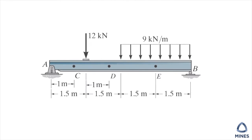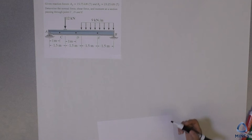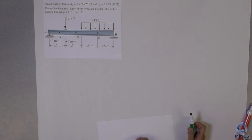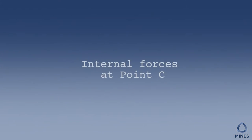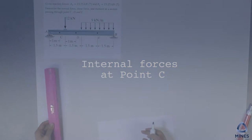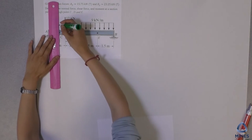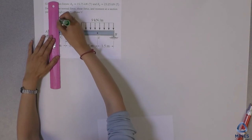For this problem we have to find out what is the internal force at C, D, E, at different points on this simply supported beam. What we are going to do is actually do several cuts. Let's do the internal force at C first, which means we are going to do the cut at C. We can name it as the 1-1 cut.